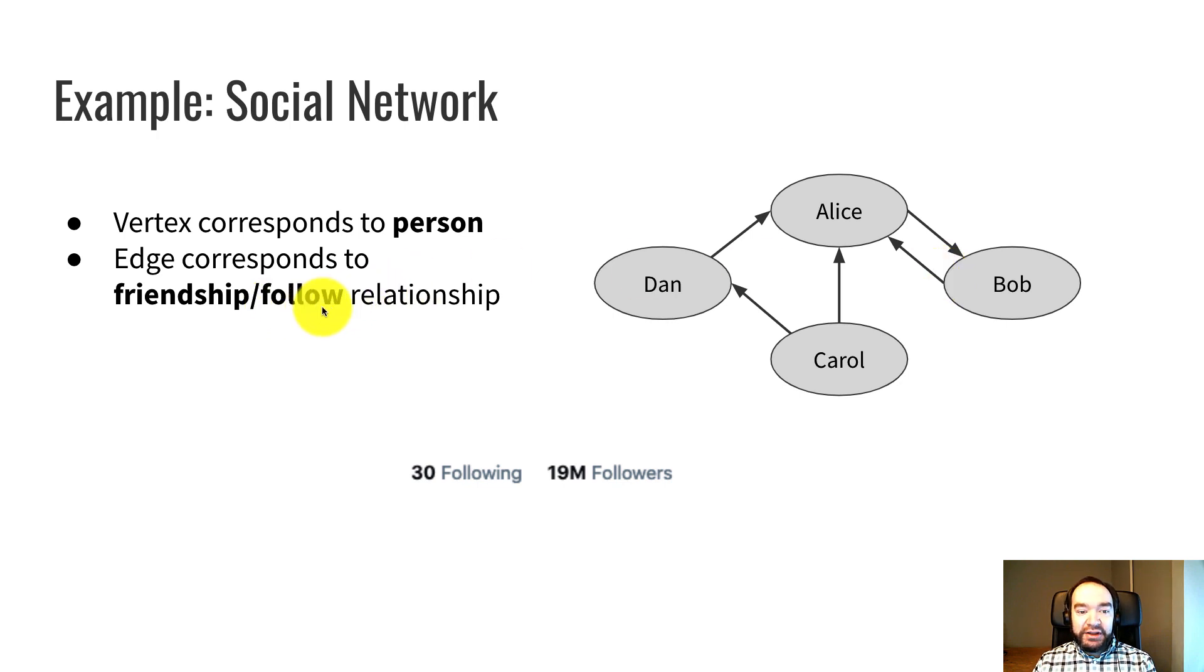Or Twitter has follow relationships. So we could create an edge between two vertices when one Twitter user follows the other. And this probably is how Twitter keeps a database of its users because it has those statistics, 30 following, 19 million followers, things like that. They probably have something like one of these graphs and use a graph data structure to report those statistics.